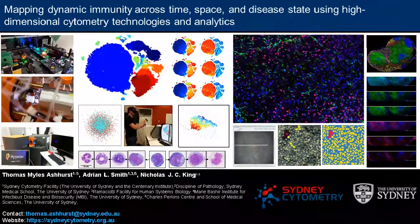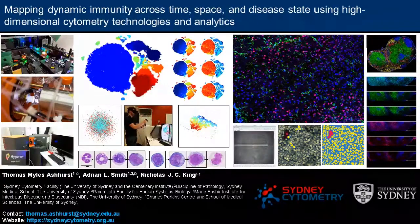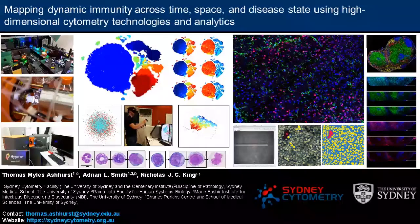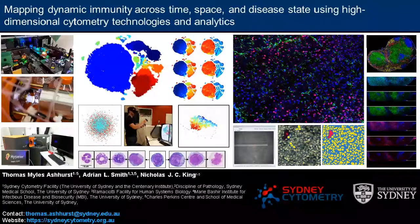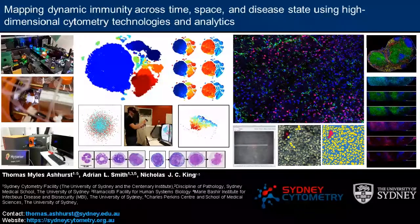To do this, he utilizes high-dimensional cytometry systems, such as mass cytometry and 29-parameter next-generation fluorescent cytometry, as well as high-dimensional imaging systems such as imaging mass cytometry, to interrogate cellular systems in a range of disease contexts. To aid in analysis, he applies and improves existing computational analysis tools in addition to developing his own novel algorithms for analyzing high-dimensional datasets.